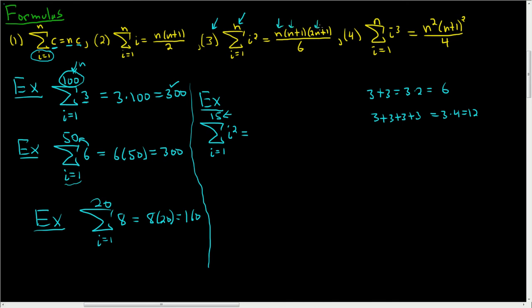plug the 15 in for the n. So you get 15, and then 15 plus 1 is 16. And then 2 times 15 is 30, and you add 1, so you get 31. And all of this is being divided by 6. If you work this out, you should get 1,240.